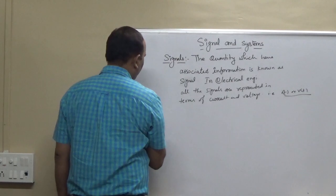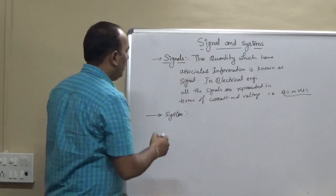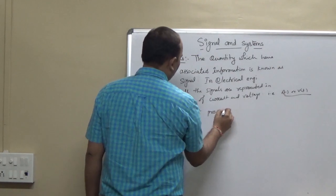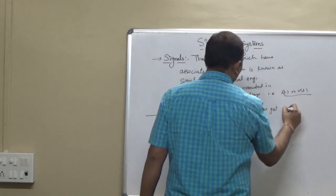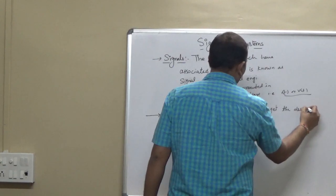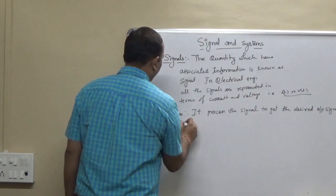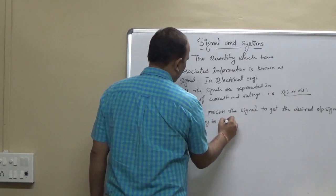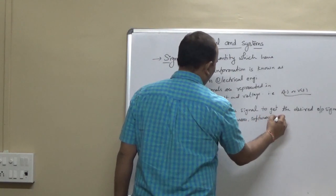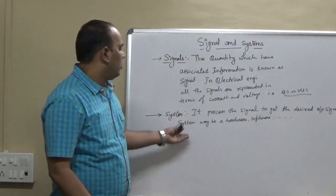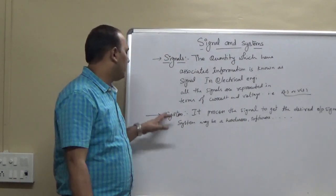The second thing is system. A system means it processes the signal, and it may be hardware, software, any electrical equipment, mechanical equipment, or anything else. So this is the basic definition of signal and systems.